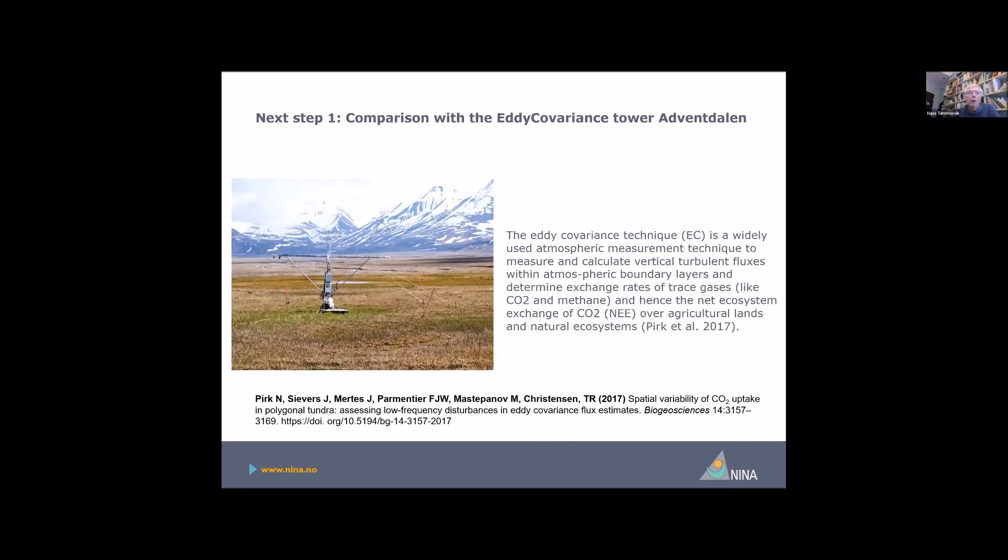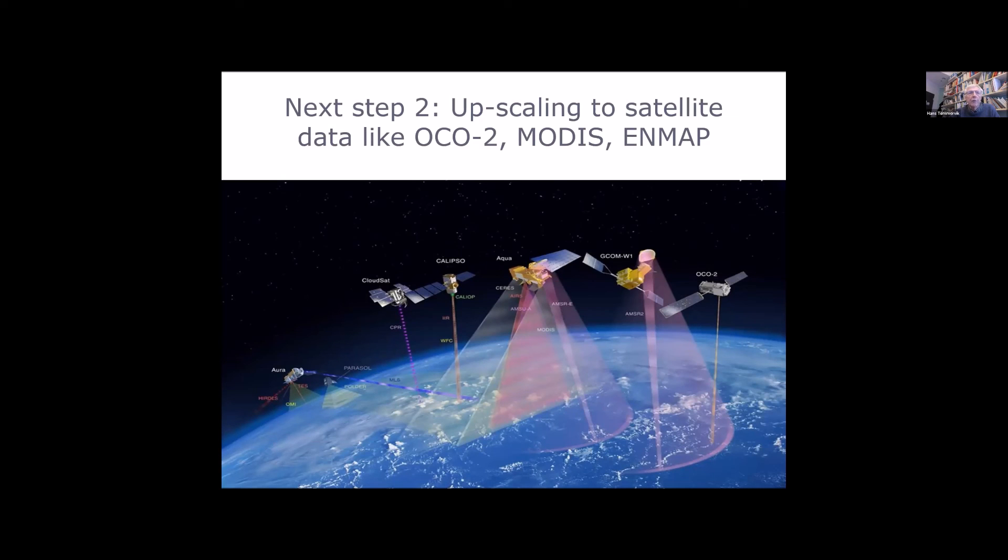The next step is to compare the sun-induced fluorescence data and the other indices I have shown you here with results from the monitoring data from the eddy covariance tower and compare it with a long time series that Pirkan et al. has actually accomplished, and also to compare it with satellite data like the MODIS, but also the orbiting carbon observatory from NASA and the new coming ENMAP satellite, German ENMAP satellite, which is a spectrometer satellite. So that was what I had.